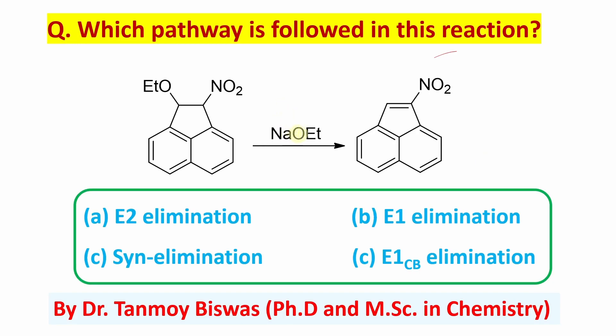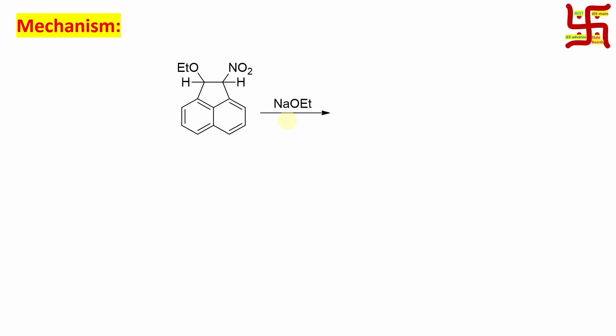Now, if you look at the reaction, it is treated with sodium ethoxide. By the way, student, sodium ethoxide is actually a base here, means you can say O minus Na plus. Now, it is behaving as base, means it will abstract proton. Now, if you look at this molecule, which proton is maximum acidic? By the way, student, if you compare any of these protons, they are relatively less acidic compared to this proton.